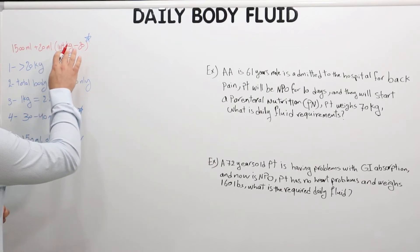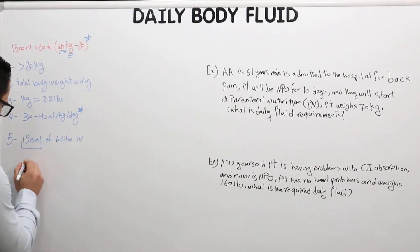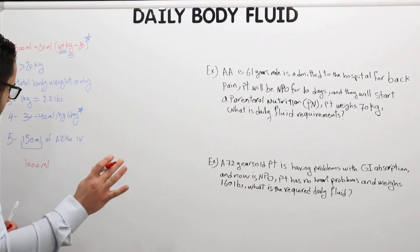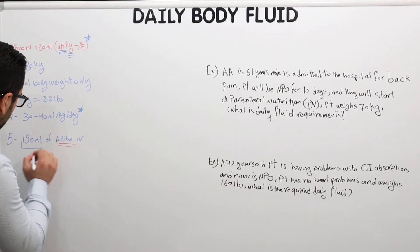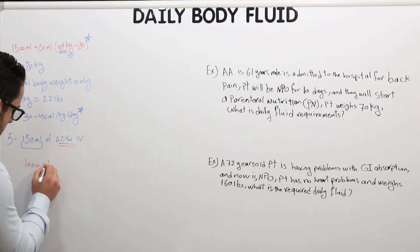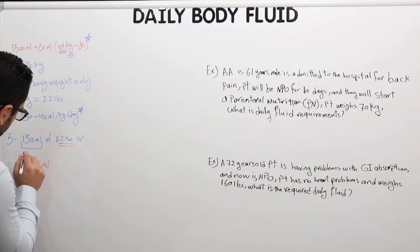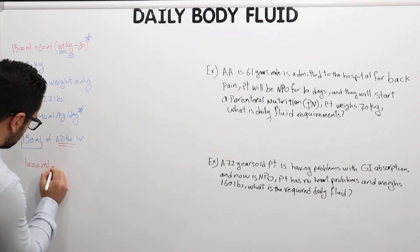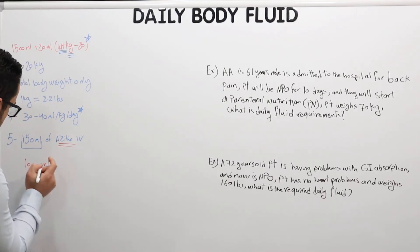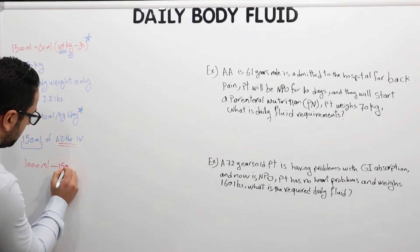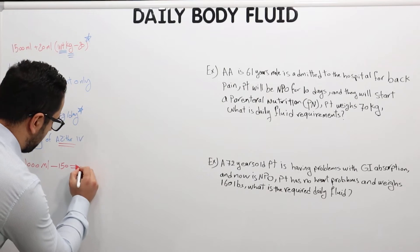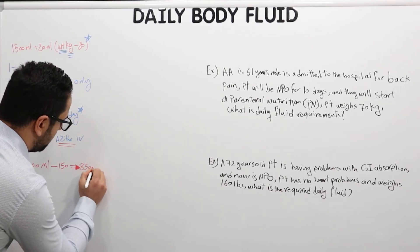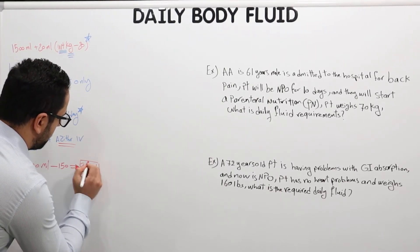You should consider this amount—150—in your calculation. So let's say you calculate the whole volume and it comes out to be 1000 milliliters. You should not give the patient 1000 milliliters because they're already receiving 150 from their medication. So you should subtract 150 from 1000. In this case, this patient will end up having a total daily fluid of 850 milliliters instead of 1000.